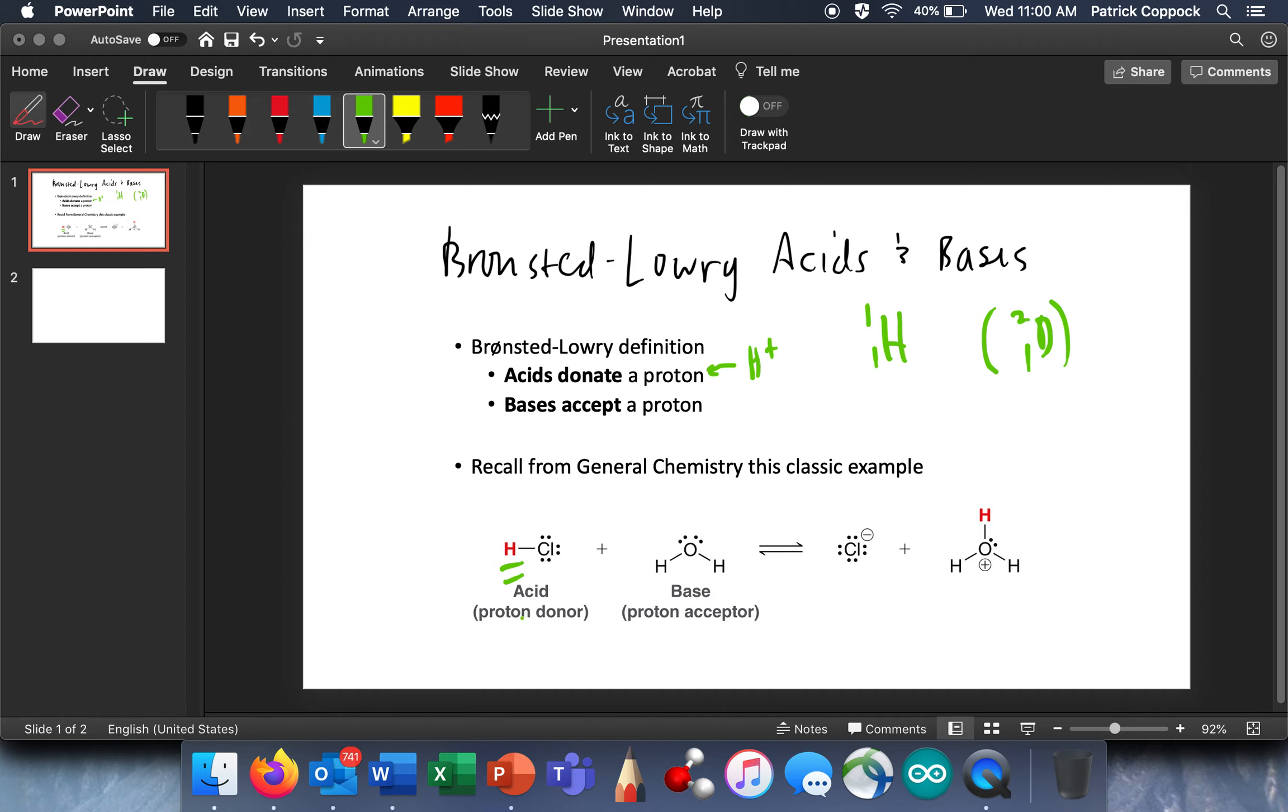So an acid, a Bronsted-Lowry acid, is a proton donor. Can you see how this HCl lost an H+, and that's what's missing over here?